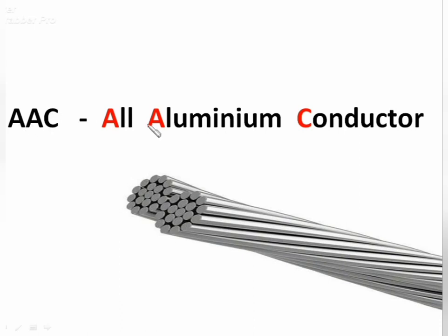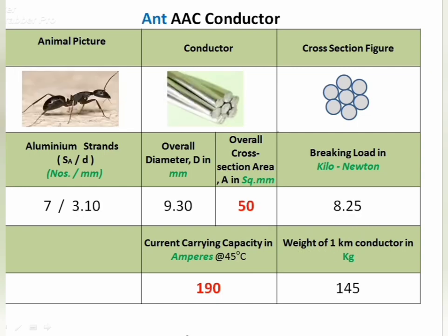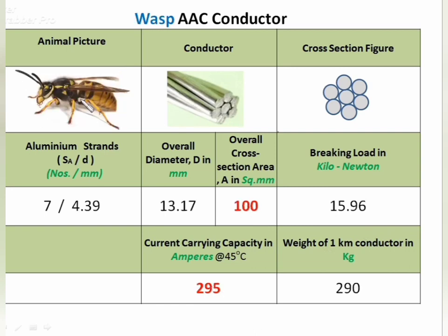Now we will see the AAC (All Aluminium Conductor) — all strands are made up of aluminium. Nat AAC is a type of mosquito conductor with seven strands, overall cross-section area 25 mm², and 120 A current carrying capacity. Breaking load is lower at 4.52 kN. The next conductor has 50 mm² area, 190 A current capacity, and breaking load 8.25 kN. Wasp, a type of honeybee, has 100 mm² area, 295 A current capacity, and breaking load 15.96 kN.